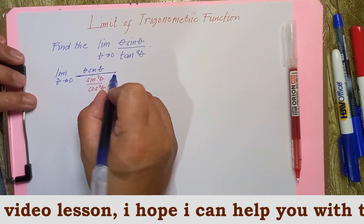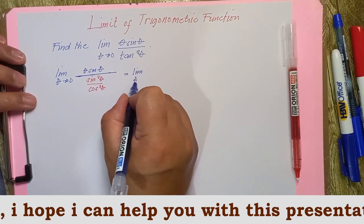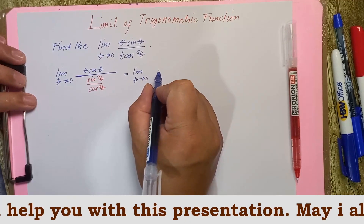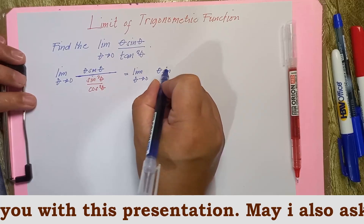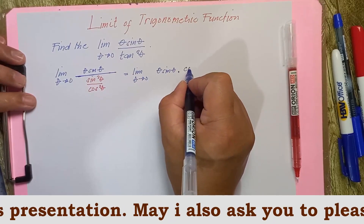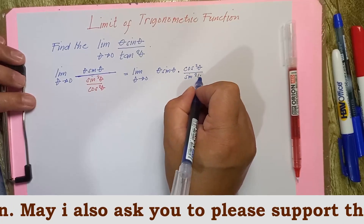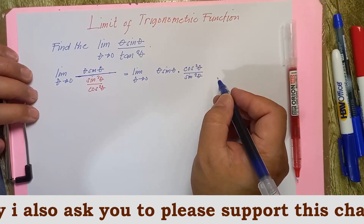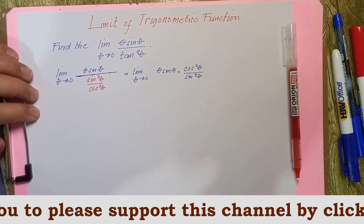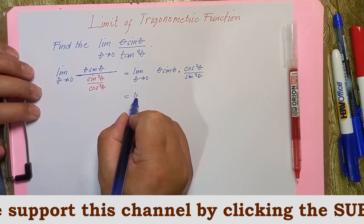We convert tangent squared theta into sine squared theta over cosine squared theta. Taking the reciprocal of the denominator, tangent squared theta becomes cosine squared theta over sine squared theta.